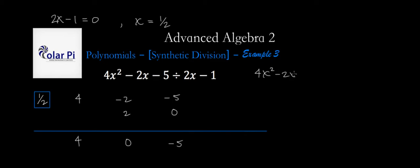4x squared minus 2x minus 5 divided by 2x minus 1 is equal to 4x plus 0, which we're just going to write as 4x, and then plus, we write our remainder, which in this case is negative 5, divided by our divisor, which is what we divided by, which is 2x minus 1 in this case.